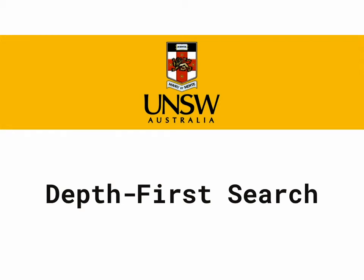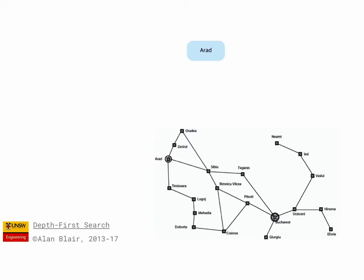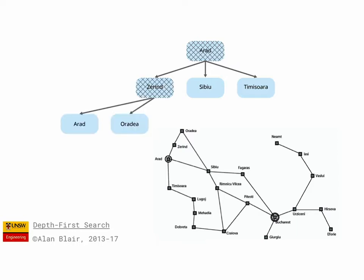The next uninformed search method we look at is depth-first search, which is similar to breadth-first search, except that instead of expanding the shallowest unexpanded node, we instead expand the deepest unexpanded node.